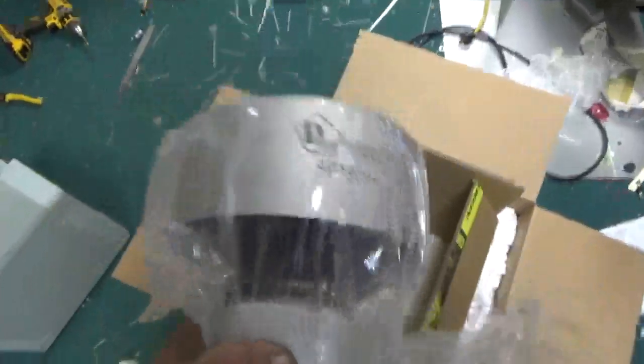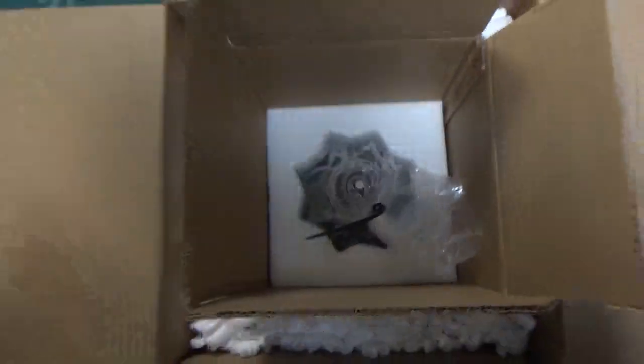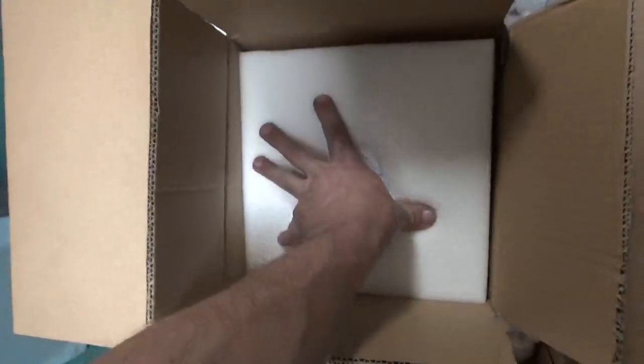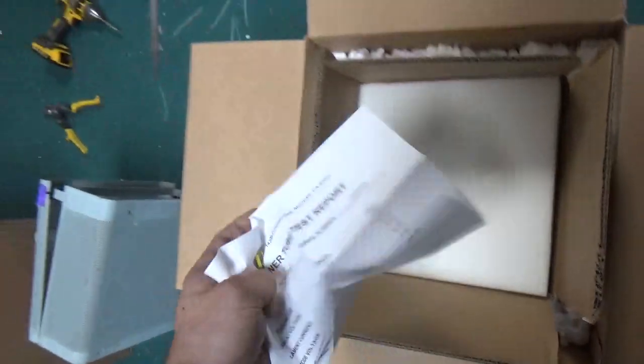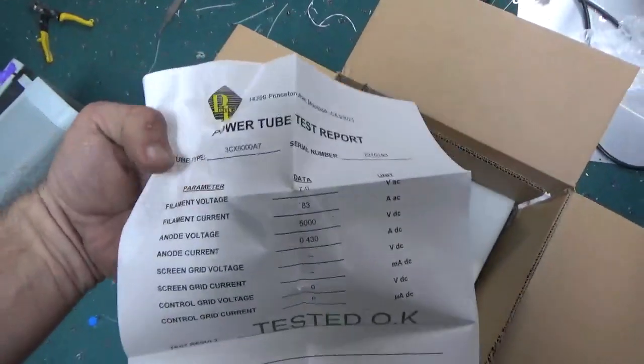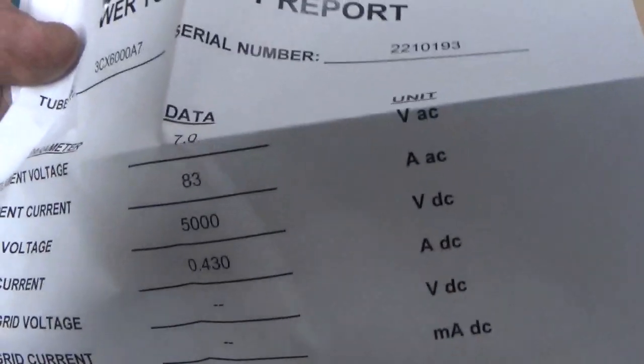iMac used to do that back in the day, but then they stopped. Nice 3CX-6000A7. Thank you. Thank you, Scott over at Penta and CEO and everyone else. Wait, sorry, another foam piece goes in here first. So I always leave the tubes in the box. They're safe in the box. I'll put the box underneath my workbench. Comes with the tester port. Seven volts, 83 amps, five thousand volts, anode.